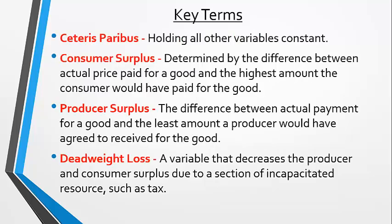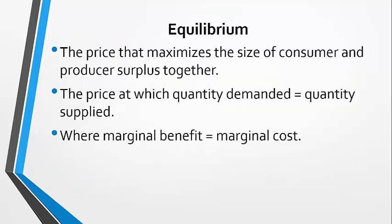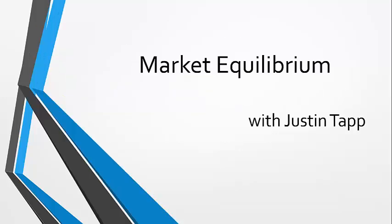So here are today's key terms — be sure you recognize them and remember our examples. Remember too that we have multiple ways of defining equilibrium: it's always the place where quantity demanded equals quantity supplied, where marginal benefit and marginal cost are equal, and where consumer and producer surplus are maximized. Thank you for watching — I'll see you soon.